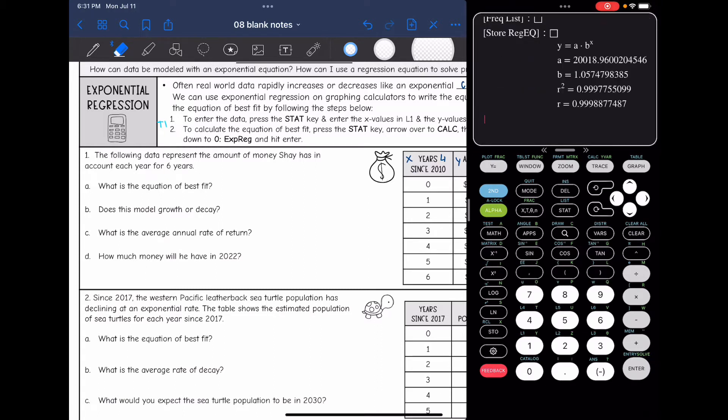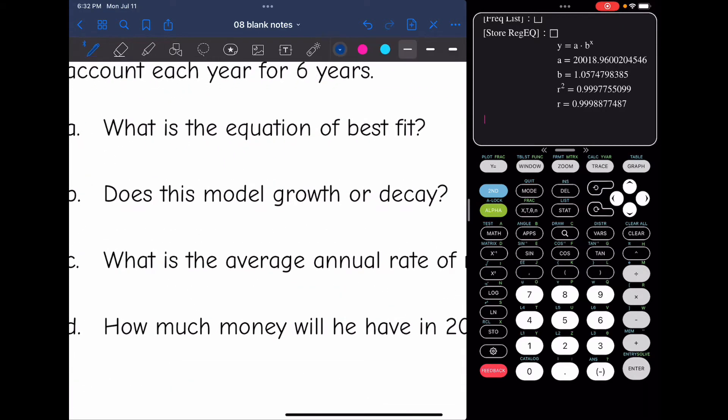Okay, and my A value is 20,018.96. And then my B value, I'm going to round that to 1.06. So it says, what is the equation of best fit? It would be Y equals 20,018.96 times 1.06 to the X.